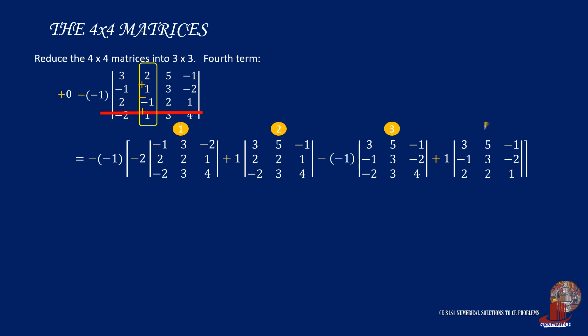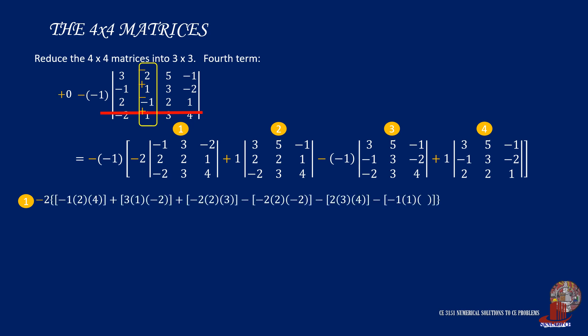This time, we number each term from 1 to 4. For the first determinant, we have minus 2 as a scalar. The diagonals are negative 1, 2, and 4, then 3, 1, and negative 2, with negative 2, 2, and 3. The antidiagonals have negative 2, 2, and negative 2, also 2, 3, and 4, with negative 1, 3, and 1. Simplify the expression and arrive at negative 55.